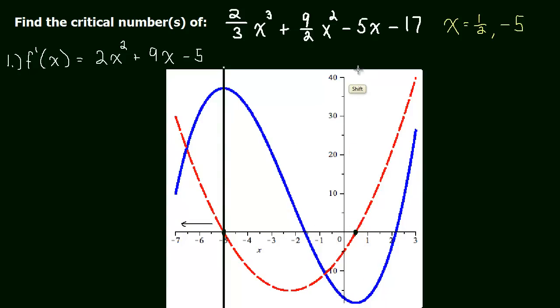Between negative 5 and 1 half, the slope should all be negative because the derivative is negative there. And that's true. If we were to examine these slopes, they're all negative. They're pointing down.